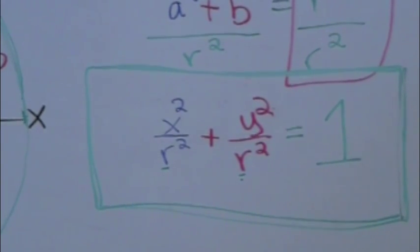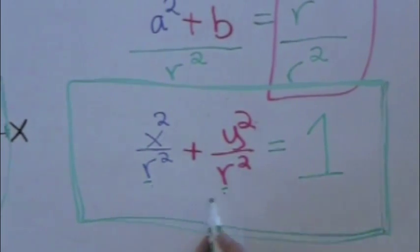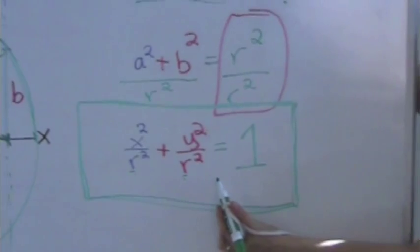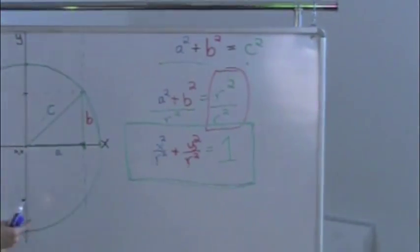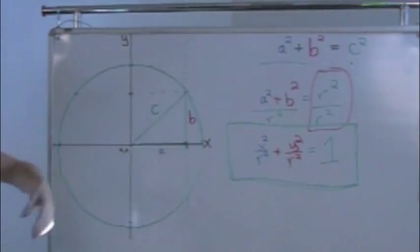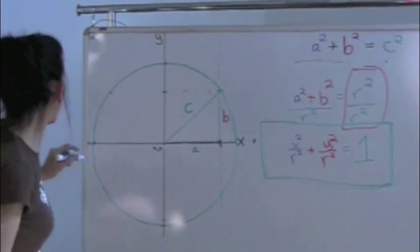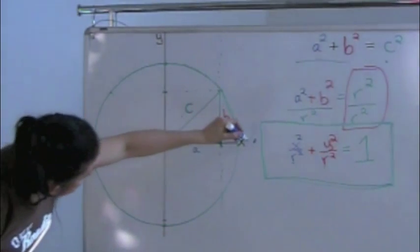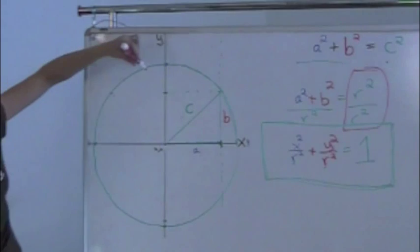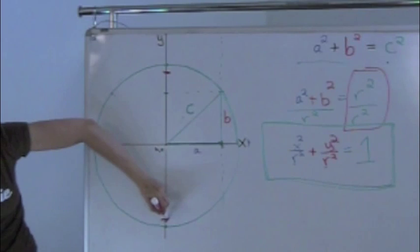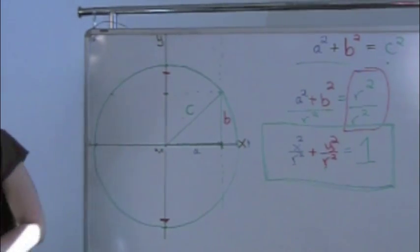But what if we were to squish this circle? Well, then these radii would be different. So let's say we squish the y-axis and we elongate the x-axis. And let's see what happens. So we're going to elongate the x-axis. We're going to say that the radius is out over here. And we're going to squish the y-axis. And we're going to say that the radius instead is down over here.